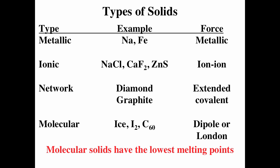If you understand the forces that keep the solids together, you can understand how that leads to the macroscopic properties. Metals have metallic bonding — positive ions in a sea of conduction electrons — leading to thermal and electrical conductivity, malleability, and ductility. Ionic solids have strong ion-ion interactions, leading to fairly high melting points. Network solids have networks of covalent bonds, which can make them very hard. Molecular solids have typically the weakest intermolecular forces, so they have the lowest melting points and very little electrical conductivity.